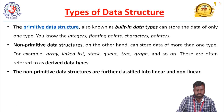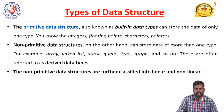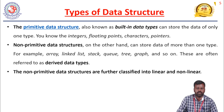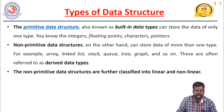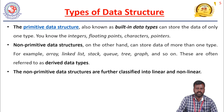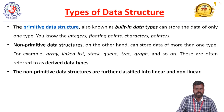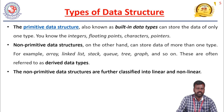Primitive data structures are also known as built-in data types that can store data of only one type — integers, floating point, characters, and pointers. Integer is numbers; floating point is decimal numbers; character is alphabets A to Z; and a pointer is a variable that points to the address of the next variable. Non-primitive data structures, on the other hand, can store data of more than one type — for example, array, linked list, stack, queue, tree, graph, and so on. These are often referred to as derived data types.